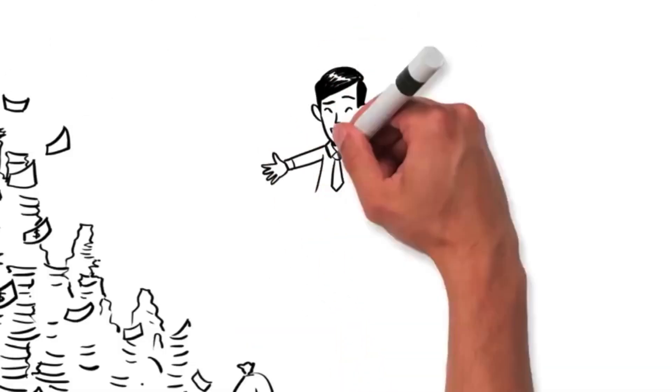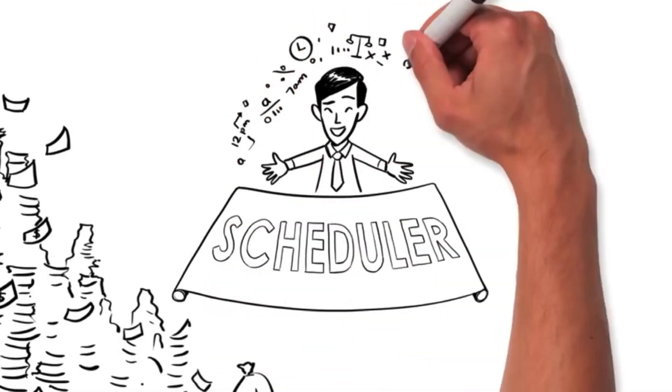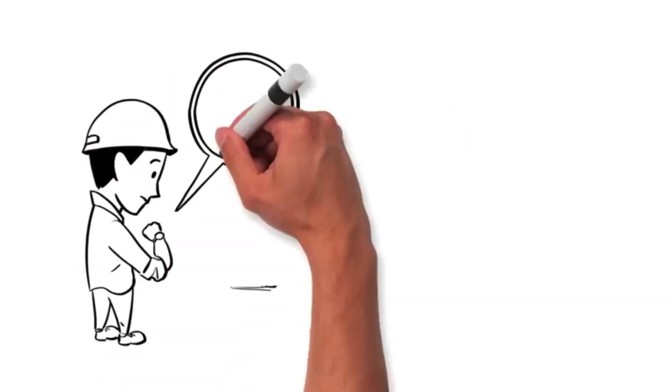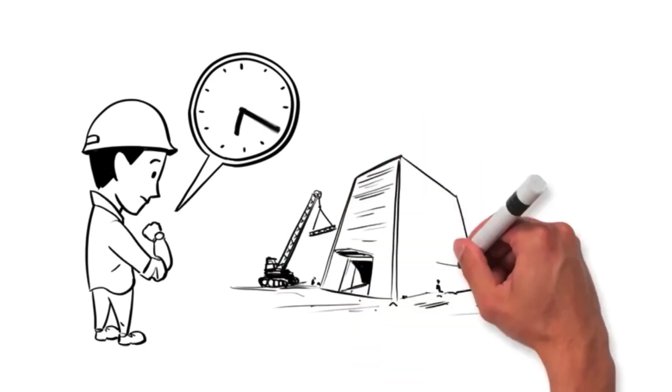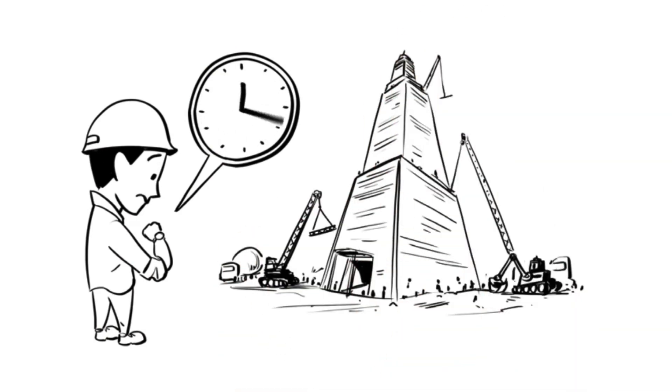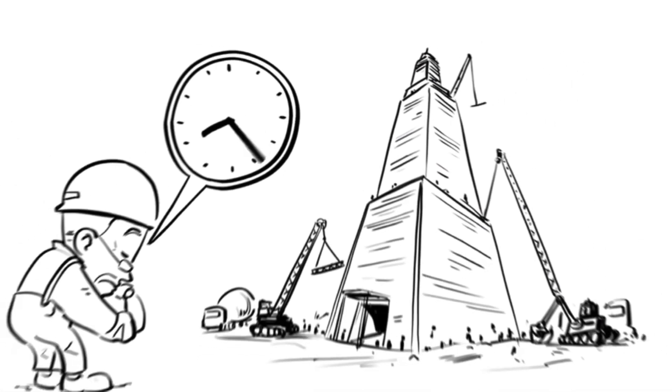Jamie works closely with Steve, the construction scheduler. Steve's job is to figure out how long everything's going to take. Like, if it takes 10 workers two and a half years to build a 20-storey building, how long will it take 50 workers to build a 120-storey building? Uh, never mind. Let's just say that without Steve, it could take a really, really long time.